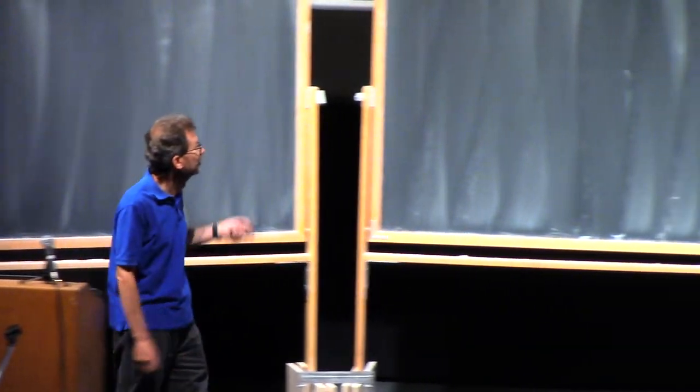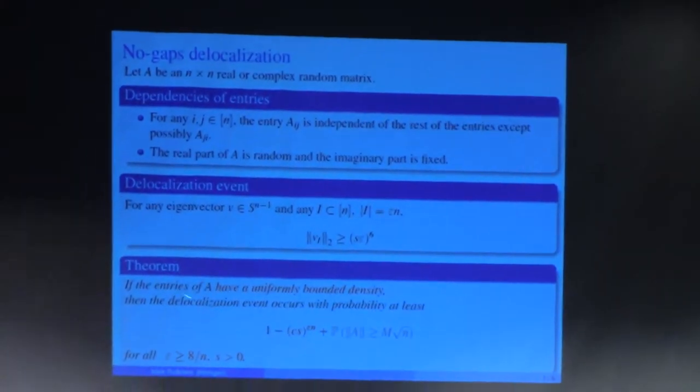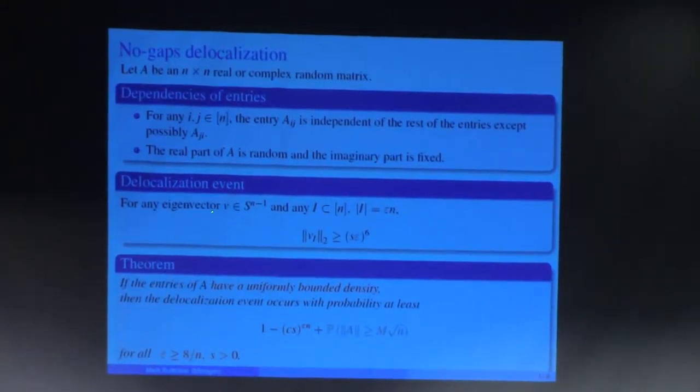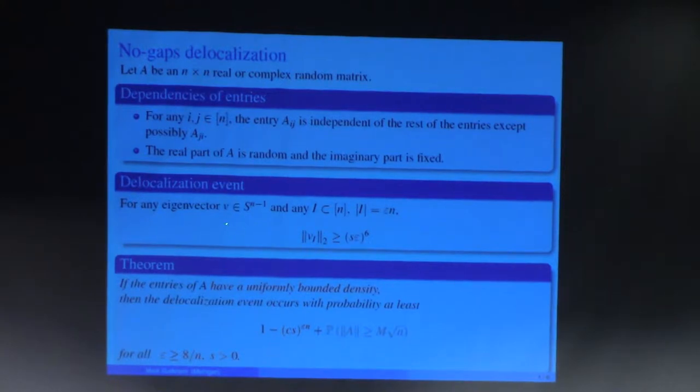But before this, let me again flash this transparency. We are considering no gaps delocalization, which means that any unit eigenvector, for any set of coordinates of cardinality epsilon n, the mass falling on these coordinates is polynomial in epsilon. And this event occurs with high probability.